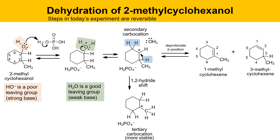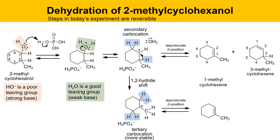This rearrangement is not reversible because it goes from a less stable to a much more stable carbocation. Once the tertiary carbocation forms, new beta positions are available. Deprotonating from some of these locations produces the same alkene as before — 1-methyl cyclohexene. However, the methyl group is now a beta position to this new carbocation, and deprotonating that species gives a new molecule named methylene cyclohexane.